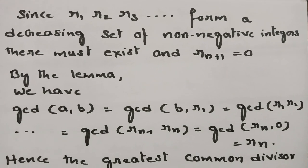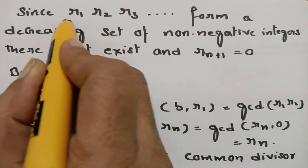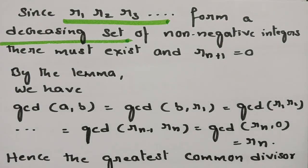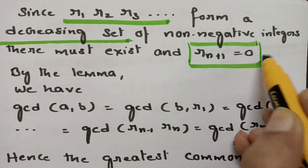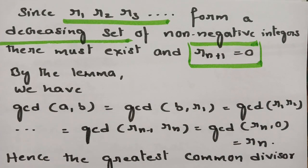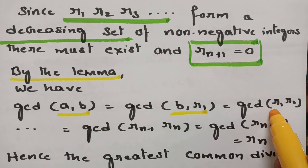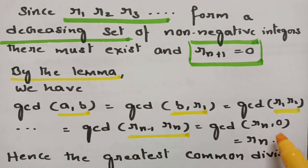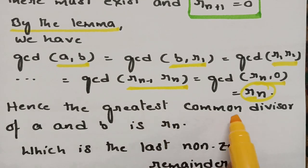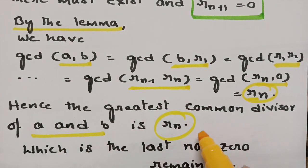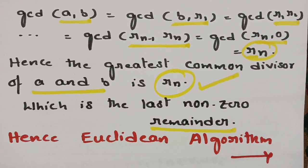Since R1, R2, R3 form a decreasing set of non-negative integers, there must exist a last Rn+1 equal to 0. By the lemma, GCD(A,B) = GCD(B,R1) = GCD(R1,R2) = ... = GCD(Rn−1, Rn), and GCD(Rn, 0) equals Rn, the last non-zero remainder. Hence the greatest common divisor of A and B is Rn.